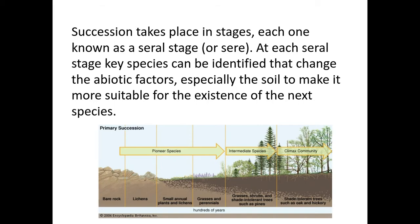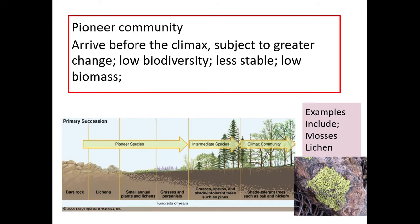Succession takes place in stages, which is known as a seral stage. In each of these stages the key species can be identified, and they change the abiotic factors — especially the soil — to make it more suitable for the existence of the next species. So we start off with our pioneer species or pioneer community. This is a red box — it's taken from the mark scheme.